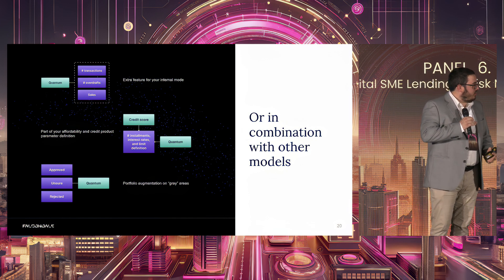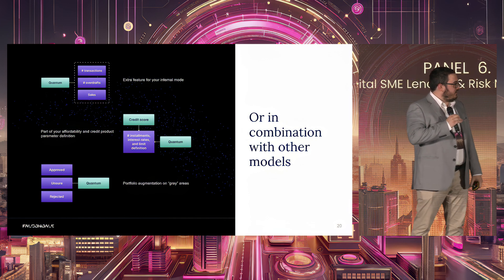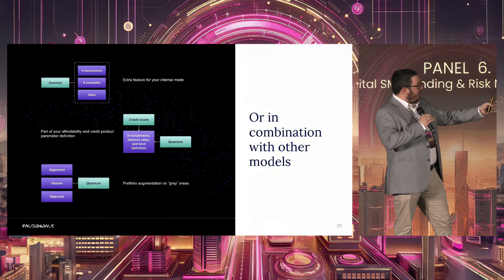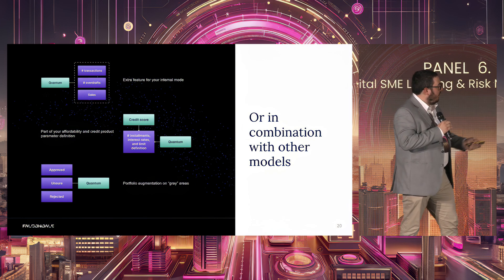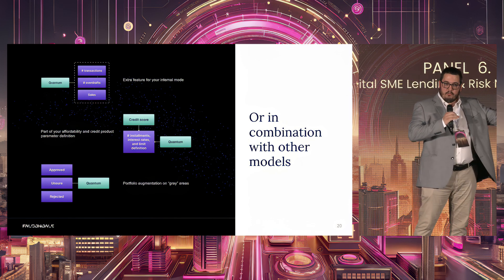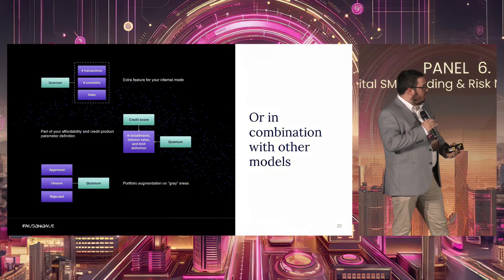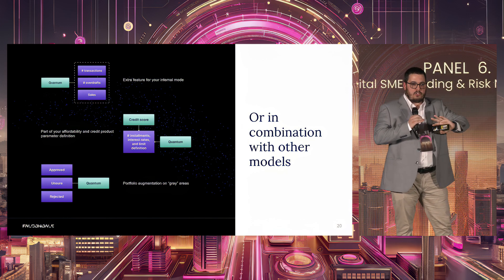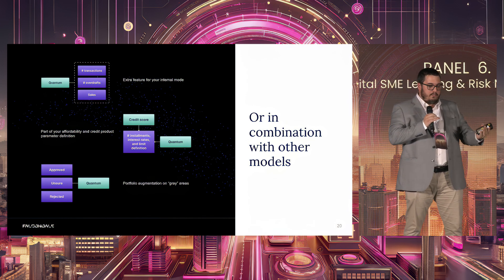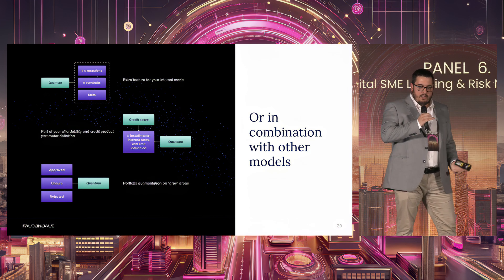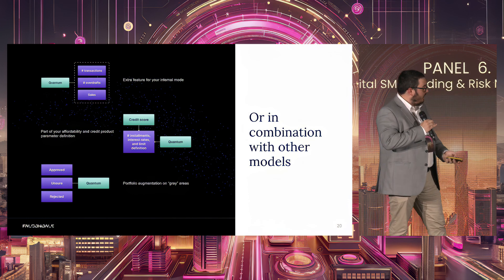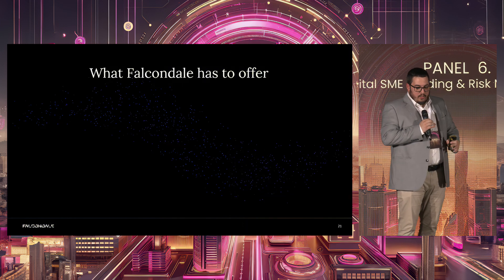Another option, which many of our clients choose, is combining quantum with your own models. You don't want to outsource your entire risk model — you want your secret sauce to differentiate from the market. If you don't have an internal team to implement quantum, you can use it as an extra layer in combination with your own models: as an extra feature or variable, for uncertain gray-zone cases between clear approvals and rejections, or as a second-layer decision to determine the interest rate, number of installments, and loan term to offer — since default behavior varies across all of those dimensions.